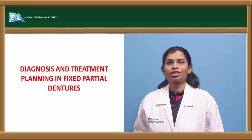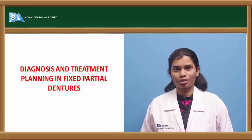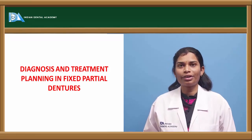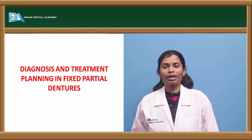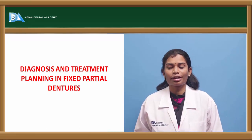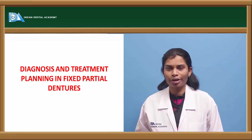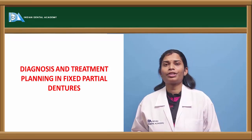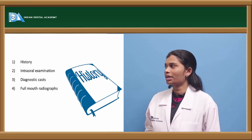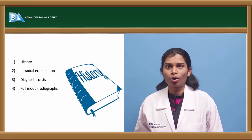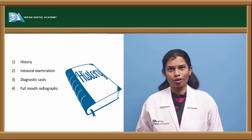The topic for discussion is diagnosis and treatment planning in fixed partial dentures. For the success of any treatment, diagnosis is very important. In the case of fixed partial dentures, the diagnosis and treatment planning stages have four important components which must be satisfied in order to arrive at correct treatment planning. These include history, intraoral examination, diagnostic cast, and full mouth radiographs.